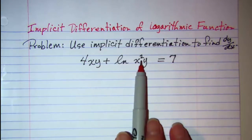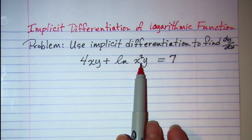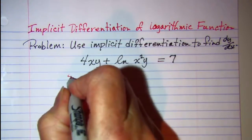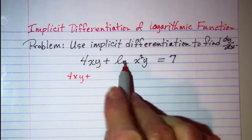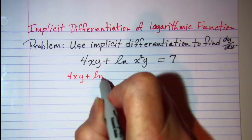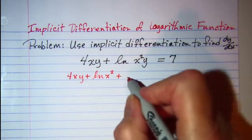So the first thing I see is the multiplication of two factors in the argument. So I can write that as the sum of two separate logarithms. So I'll have the ln of x squared plus the ln of y.